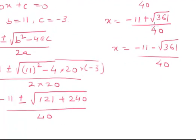These are the two values in surd form corresponding to the given quadratic equation. These are also called the zeros of the given quadratic equation. Now let's see the next example based on this.